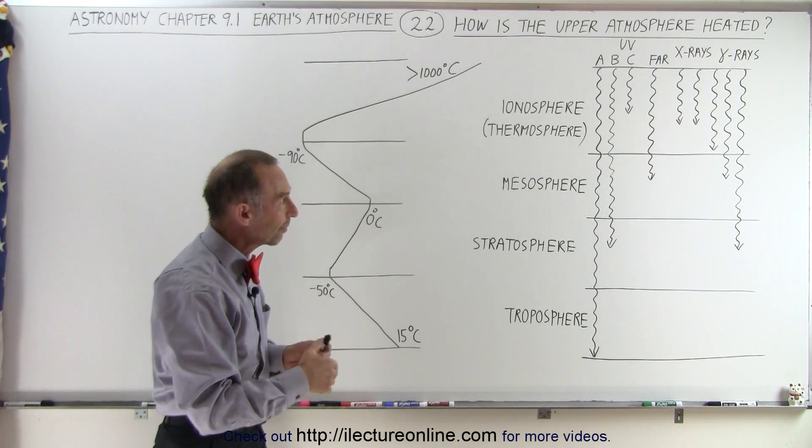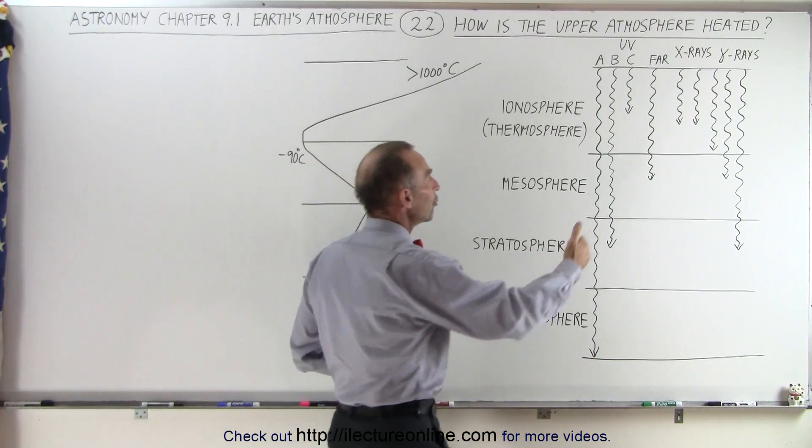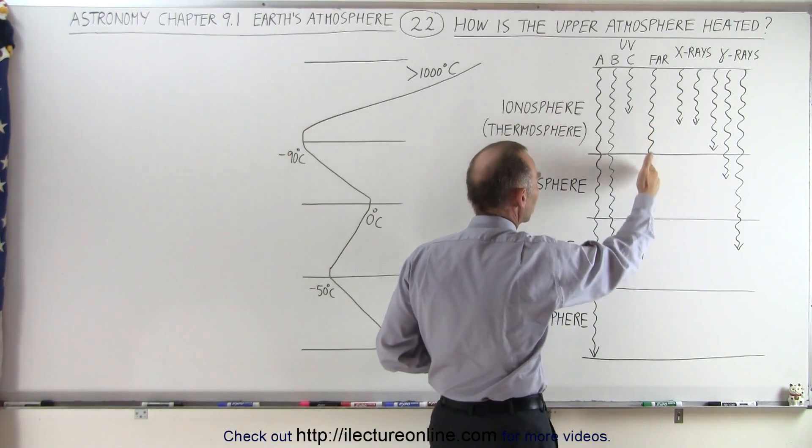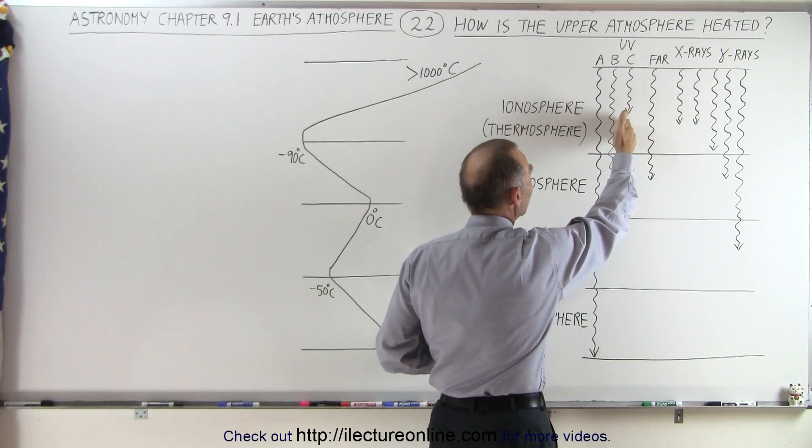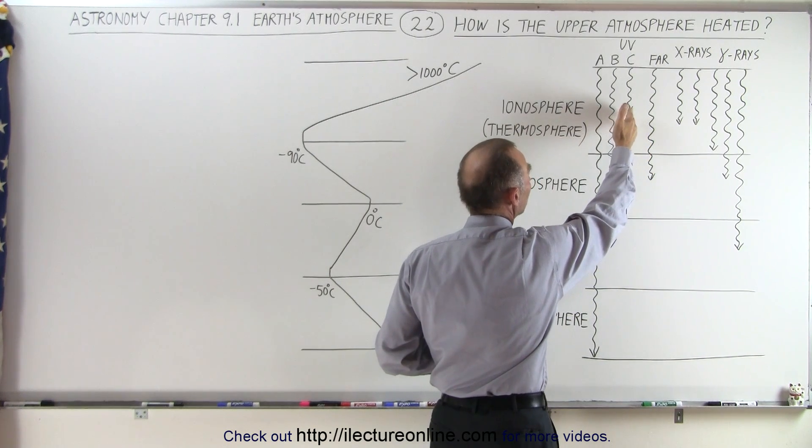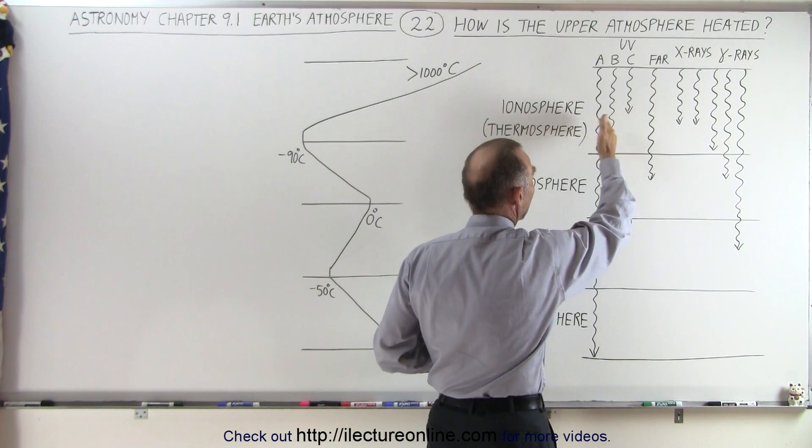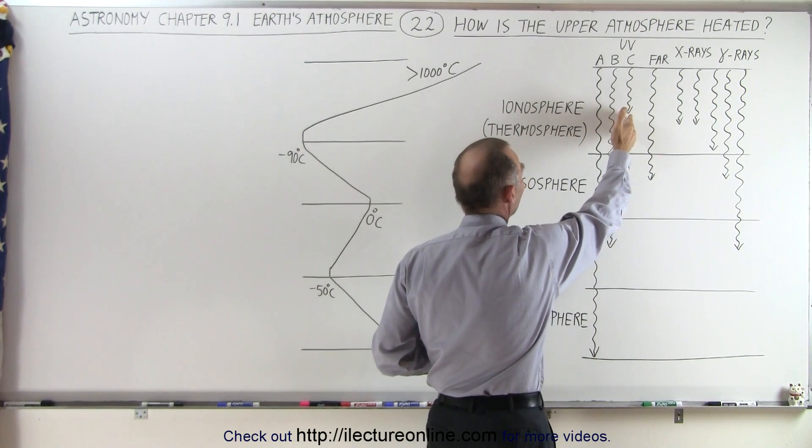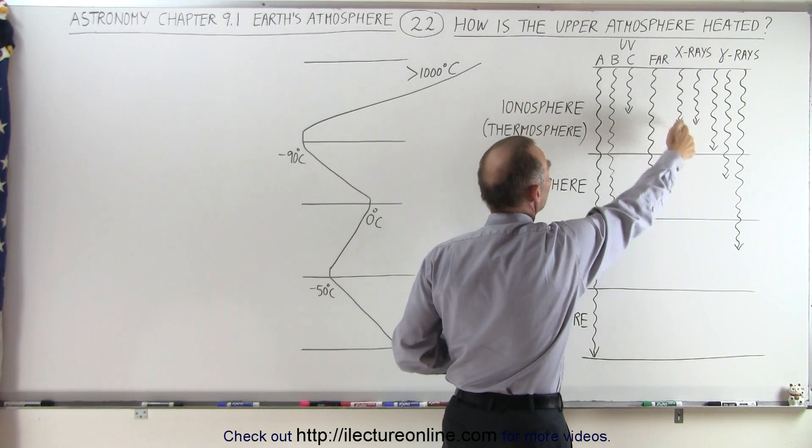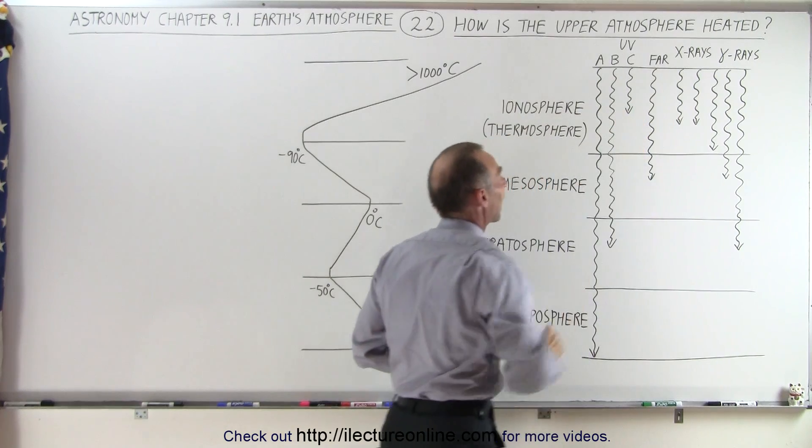Then when we look at UV, there's different types of UV. The high energy UV does make it through all the way to the mesosphere at times. The UVC, which is very high energy relative to the A and B, doesn't make it past the ionosphere, so additional heat is being dumped into the ionosphere with the high energy UV.